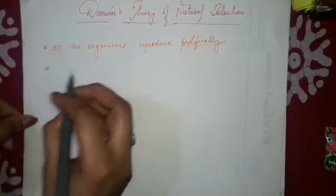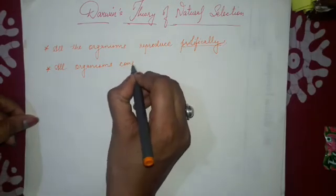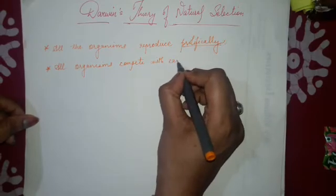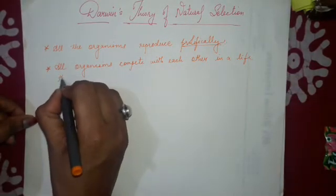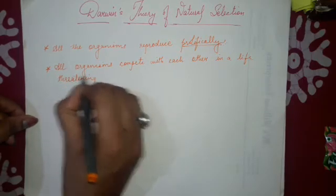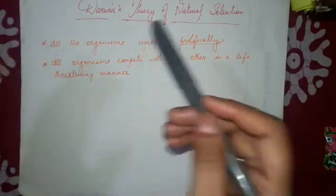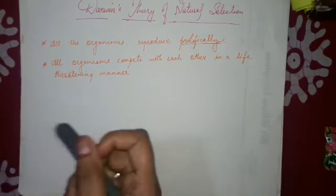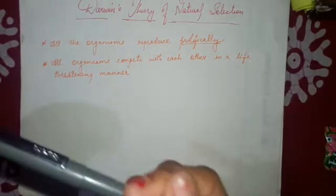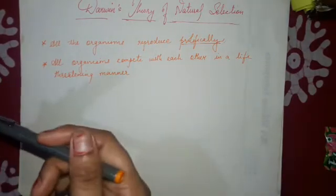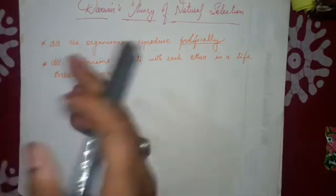The second most important thing which he considered in this theory was that all organisms compete with each other in a life-threatening manner. Just as we as individuals are running one behind the other and going through daily competition to win over some other person, the same thing is going on with plants as well as animals.